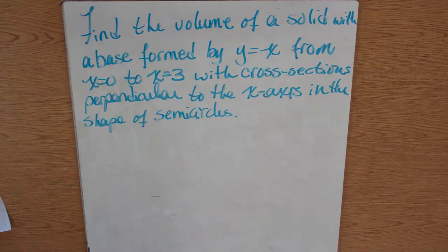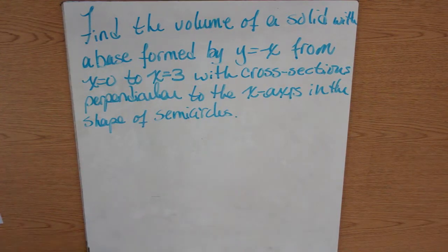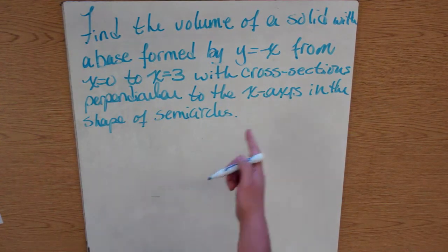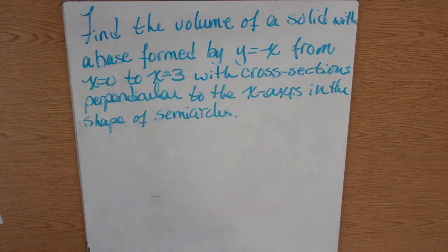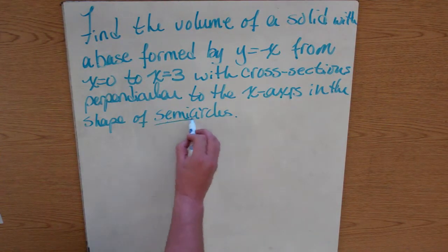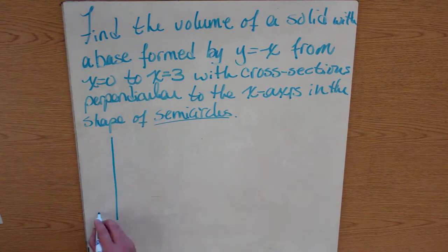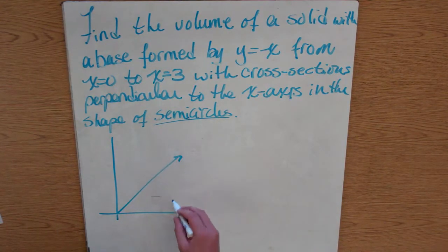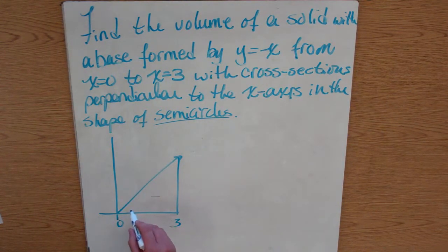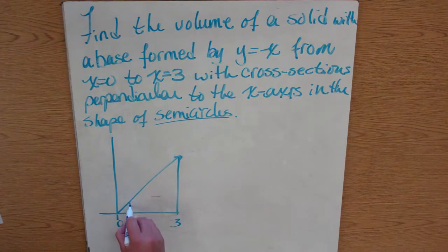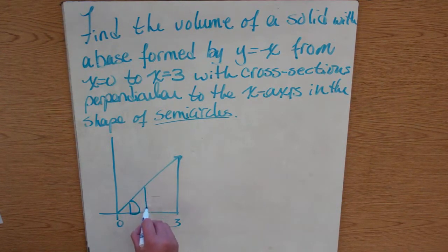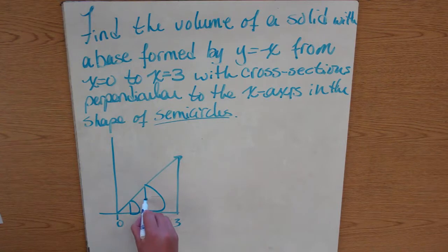Find the volume of a solid with a base formed by y equals x, so the same function from 0 to 3 with cross sections perpendicular to the x-axis in the shape of semicircles. So it's still going to look the same, 3, 0, but now our cross sections are going to be semicircles.